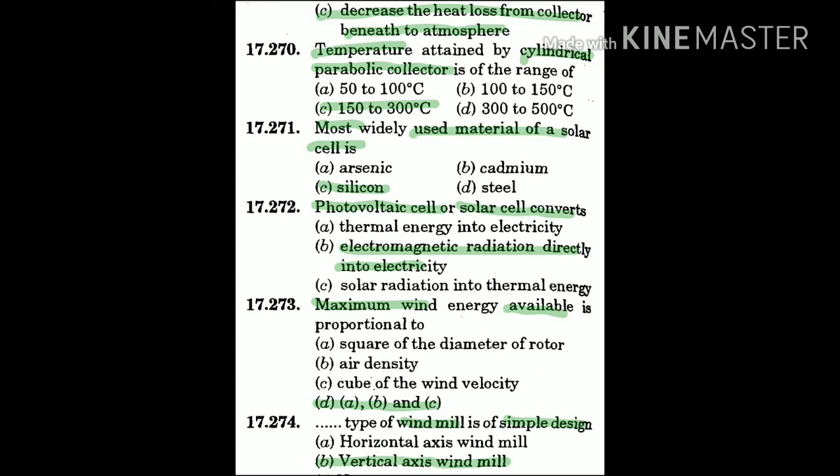Question 272: A photovoltaic cell or solar cell converts — the answer is B: electromagnetic radiation directly into electricity.